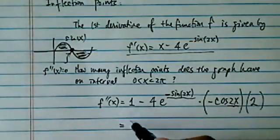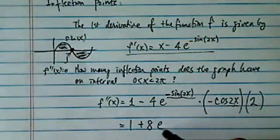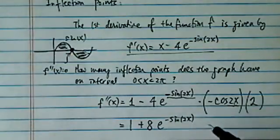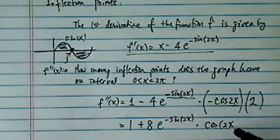So basically, the second derivative is 1 + 8e^(-sin(2x)) · cos(2x).